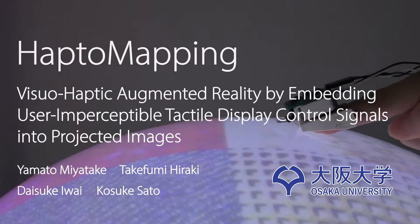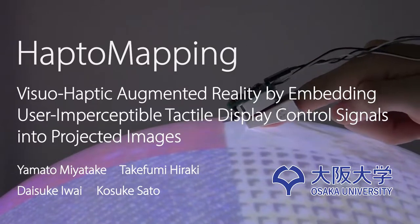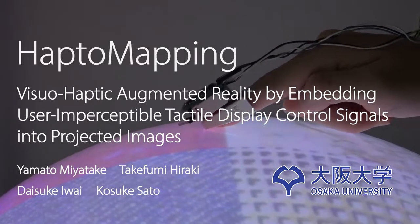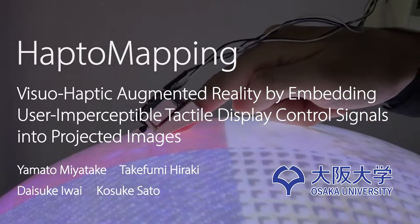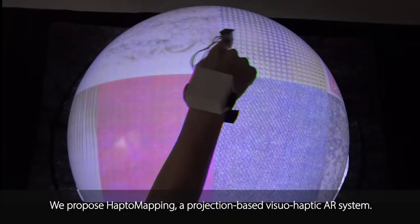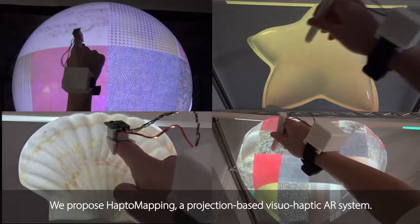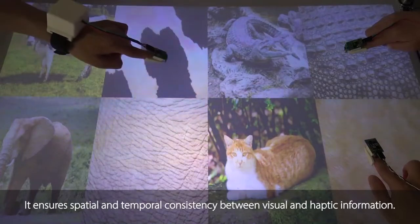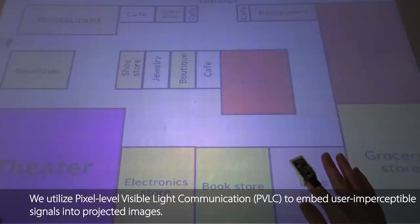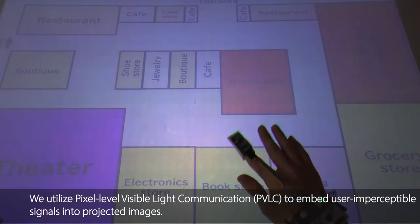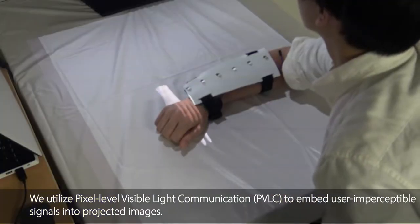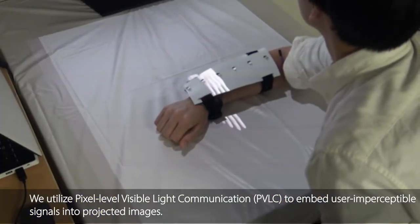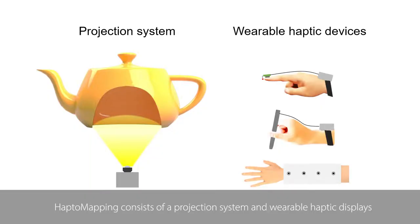HaptoMapping is a projection-based visio-haptic augmented reality system. By embedding user-imperceptible tactile display control signals into projected images using pixel-level visible light communication (PVLC), it ensures spatial and temporal consistency between visual and haptic information.